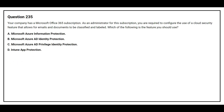Question number 235. Your company has a Microsoft Office 365 subscription. As an administrator for this subscription, you are required to configure the use of a cloud security feature that allows for emails and documents to be classified and labeled. Which of the following is the feature you should use? Option A, Microsoft Azure Information Protection. Option B, Microsoft Azure AD identity protection. Option C, Microsoft Azure AD privileged identity protection. Option D, Intune app protection. The correct answer is Option A, Microsoft Azure Information Protection.